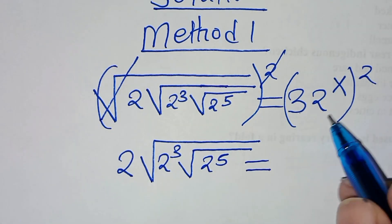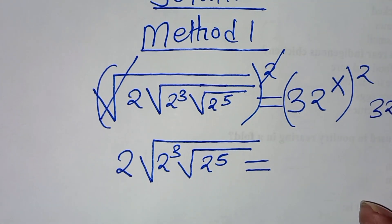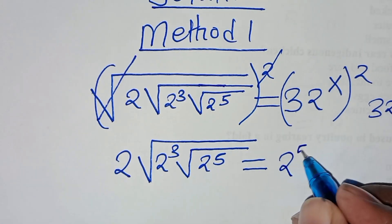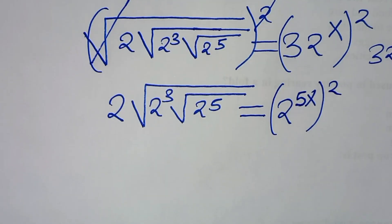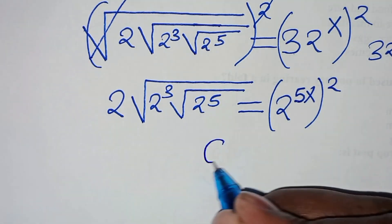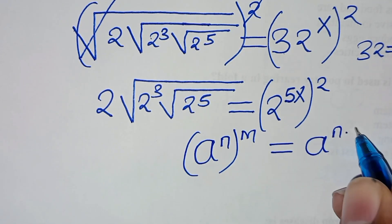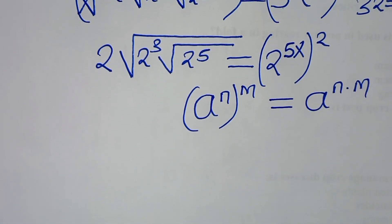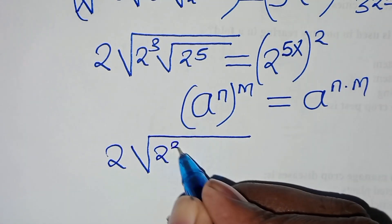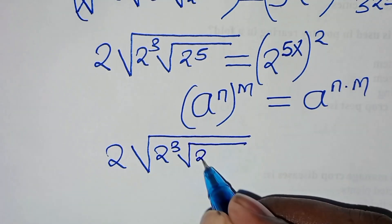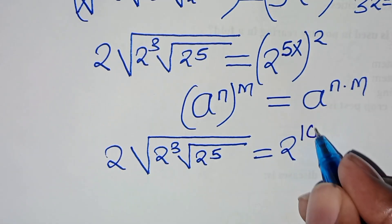This is equal to — now we can express that 2, but that 2 is the same thing as 2 to the power of 5, so here we have 2 to the power of 5x, then raised to the power of 2. This is in the form of a to the power of n raised to the power of m, which can be expressed as a to the power of n times m. Applying this exponent property, we have 2 times square root of 2 to the power of 3 times square root of 2 to the power of 5, equal to 2 raised to the power of 5x times 2, which is equal to 10x.